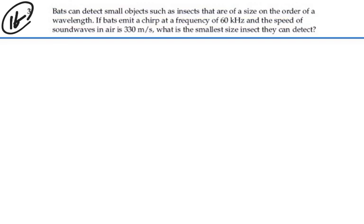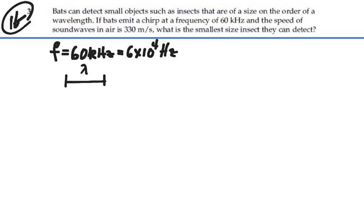We're saying that our frequency is 60 kilohertz, which would be 6 times 10 to the 4 hertz. And bats can detect something on the order of a wavelength. The velocity should be equal to the wavelength times the frequency. So the wavelength will equal the velocity divided by the frequency.